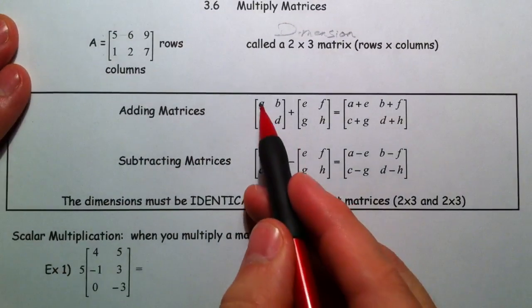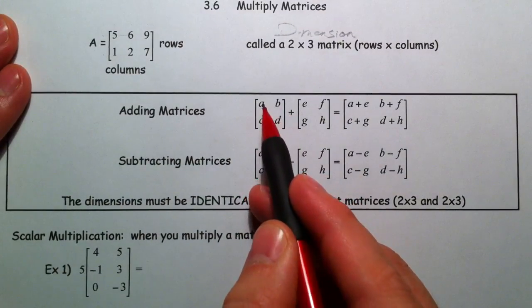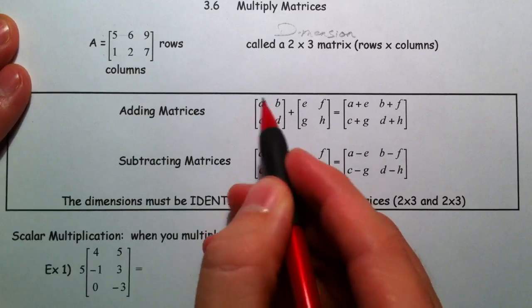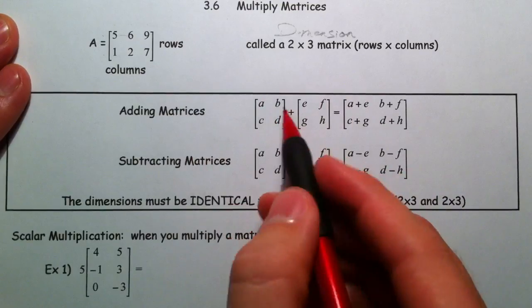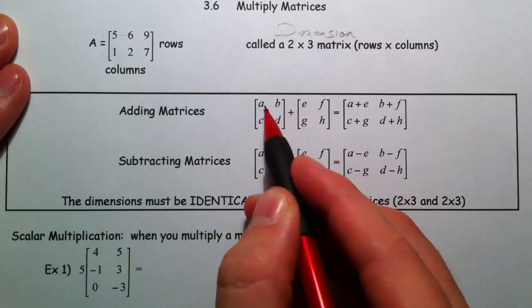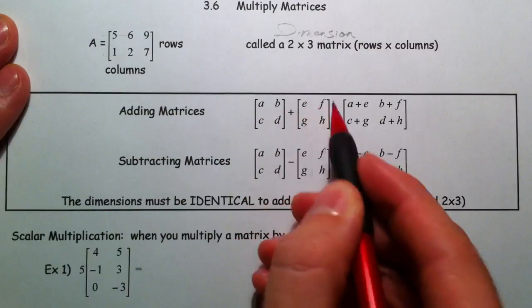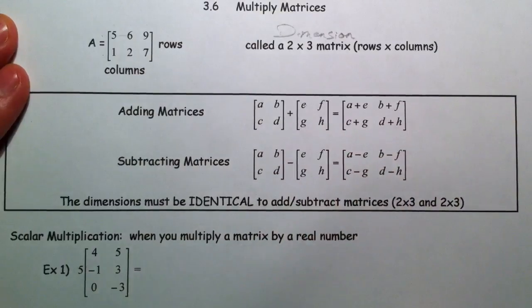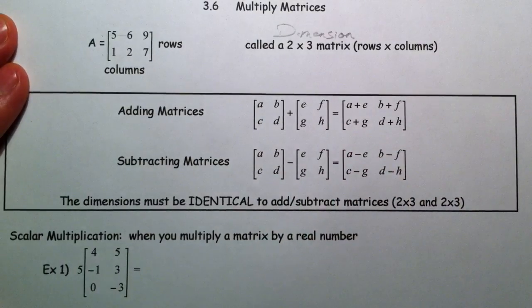So adding matrices. Each one of these numbers corresponds to a specific, like I said, sophomore males or something. And so you're always going to add the corresponding parts. So top left, top left, top right, top right. Just add the parts together. It's really quite simple.